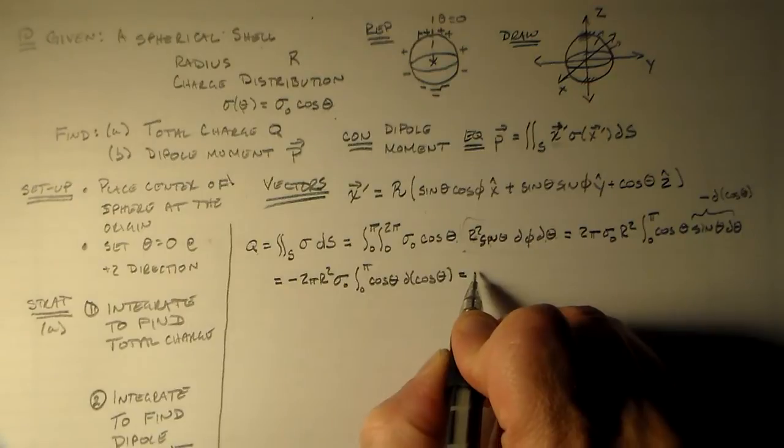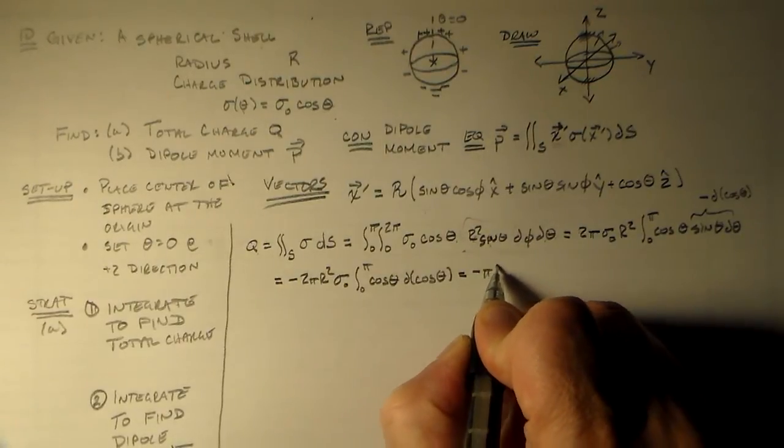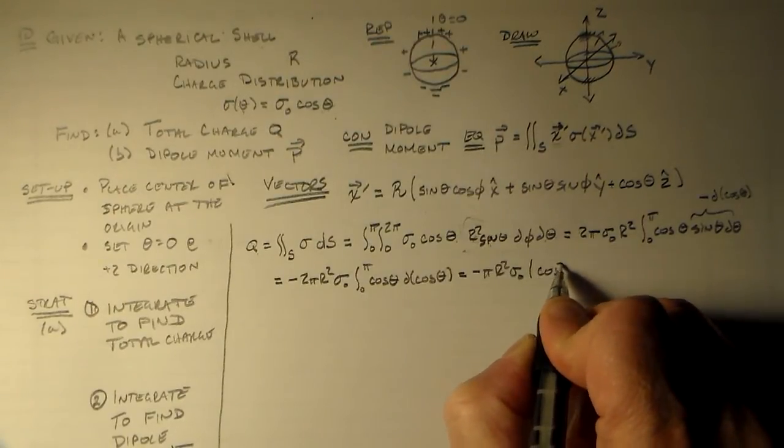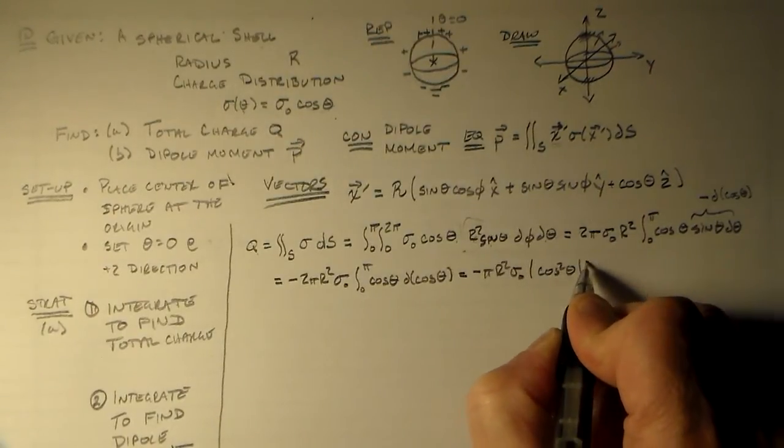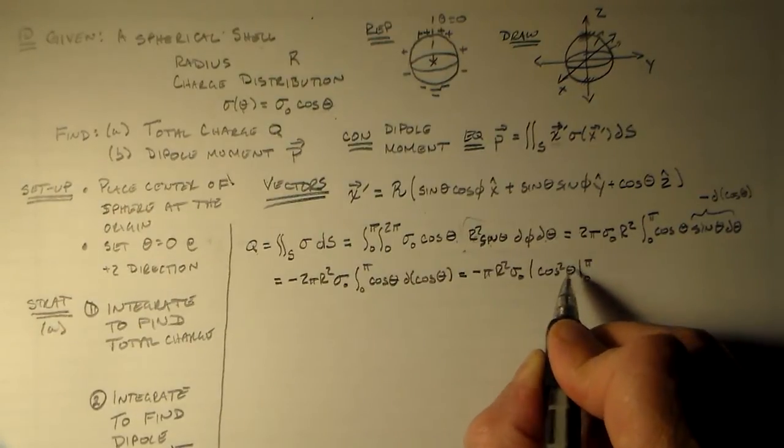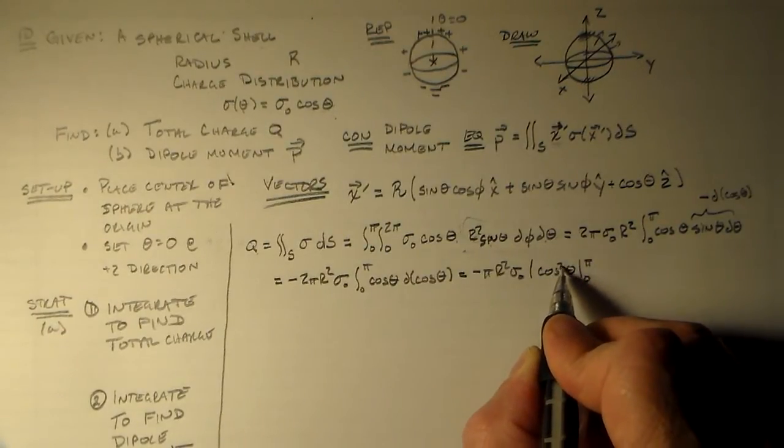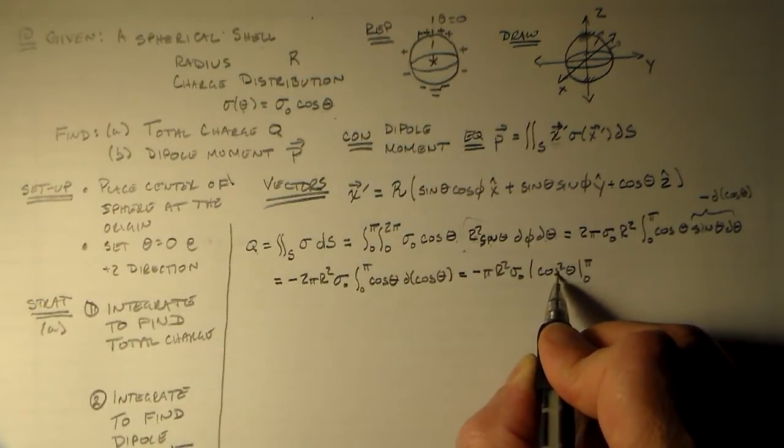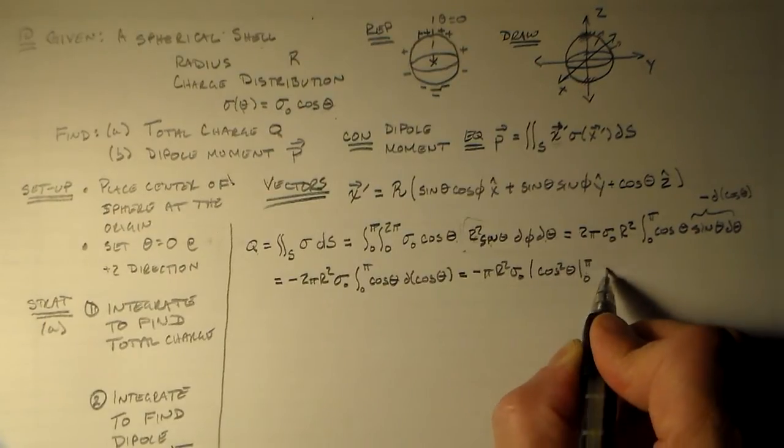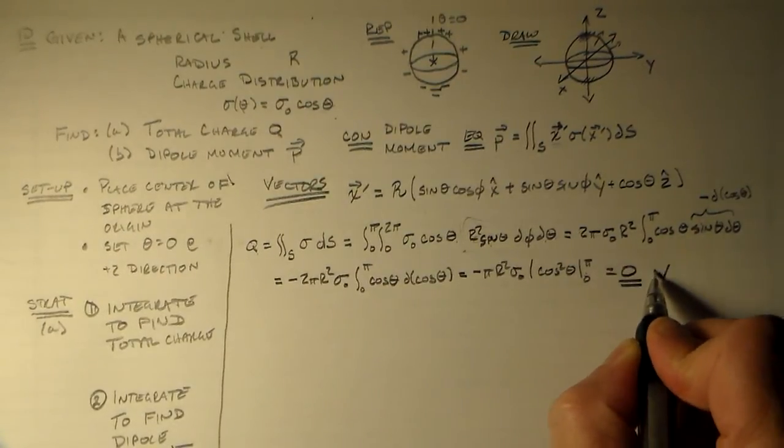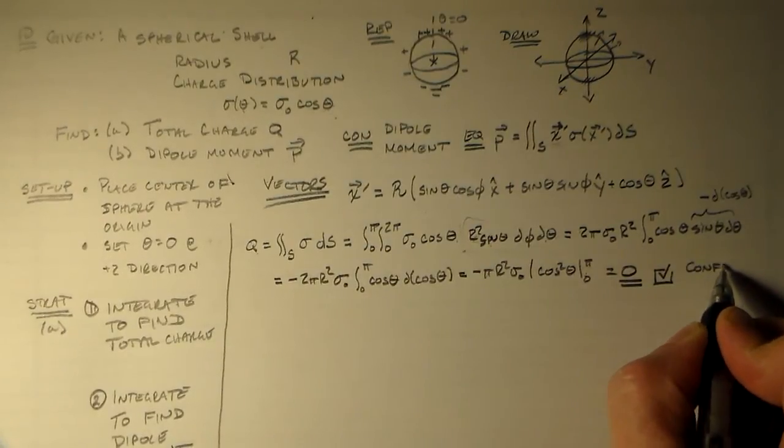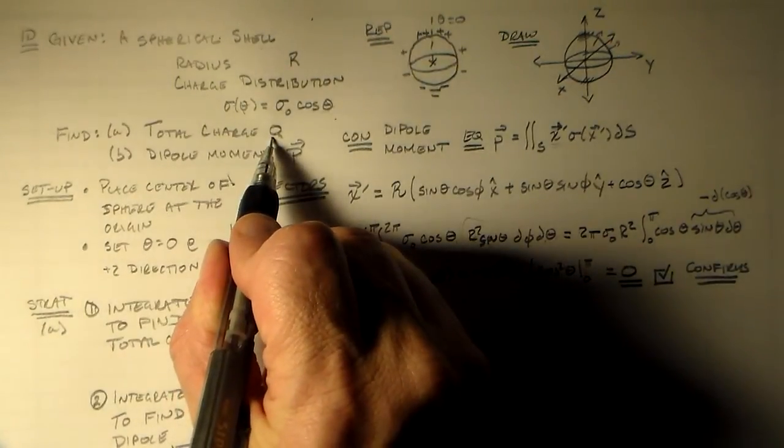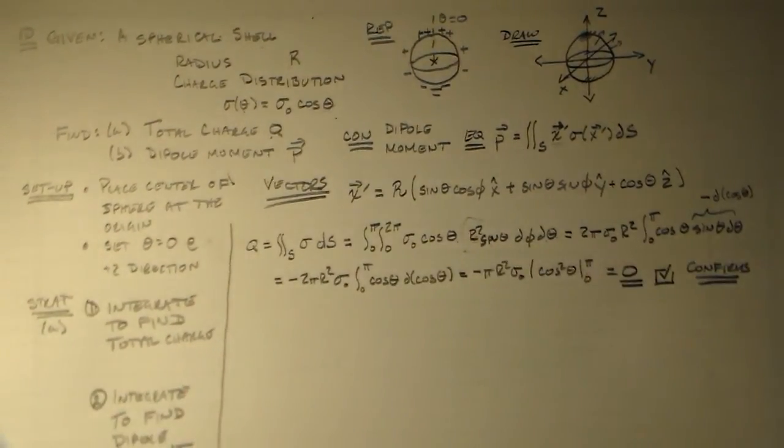We're going to evaluate it at 0 and pi. Cosine of 0 is 1, or the square of 1 is 1. Cosine of pi is equal to minus 1. The square of minus 1 is 1. So we have 1 minus 1, which is 0. Which confirms what we were saying before. We said before the total charge has to be equal to 0 for the dipole moment to make any sense.